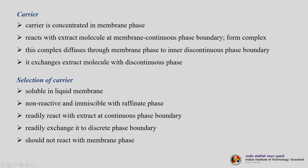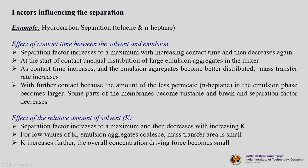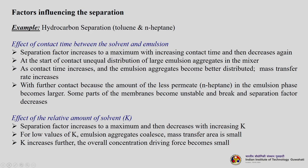Factors influencing the separation are discussed using the example of hydrocarbon separation — toluene and n-heptane. Contact time between the solvent and emulsion is always extremely important and should be optimized. Separation factor increases to a maximum with increasing contact time then decreases. At the start of contact there is unequal distribution of large emulsion aggregates; as contact time increases the aggregates become better distributed and mass transfer rate increases. With further contact, the amount of less permeable n-heptane in the emulsion phase increases, some membrane parts become unstable and break, and the separation factor decreases.